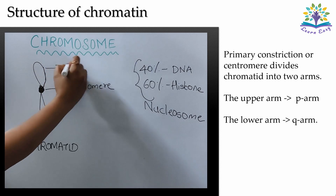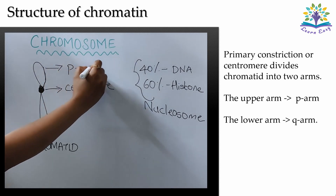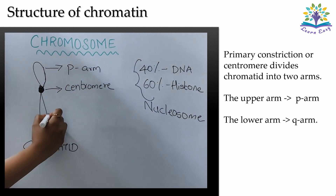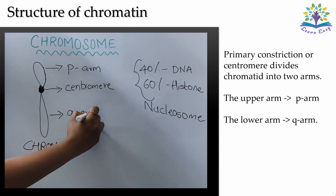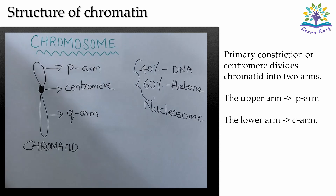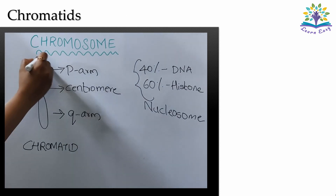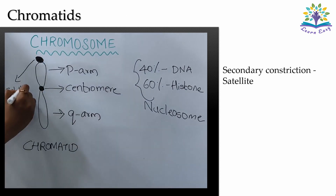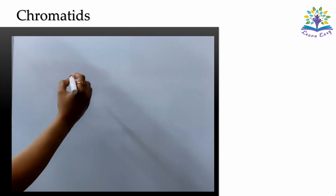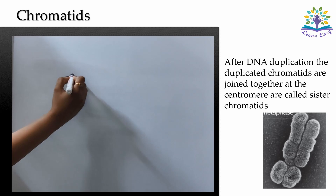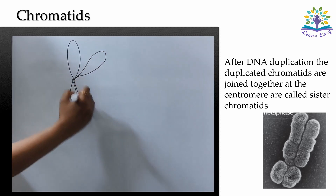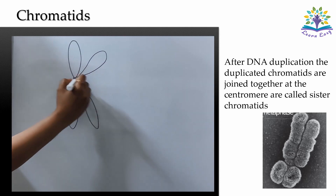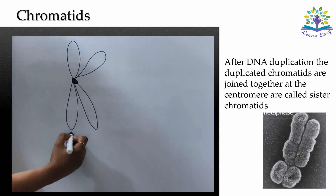Before DNA duplication, a chromosome consists of one chromatid, which has a primary constriction called the centromere. The centromere divides the chromatid into two arms: the upper arm is called the P arm and the lower arm is called the Q arm. Sometimes they have a region of secondary constriction called a satellite.